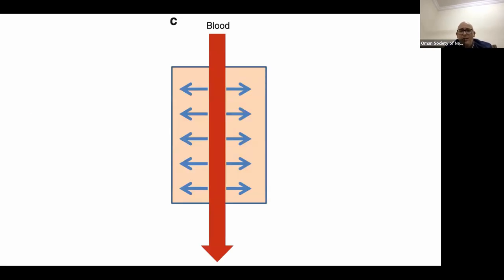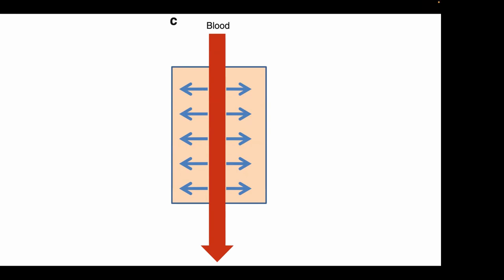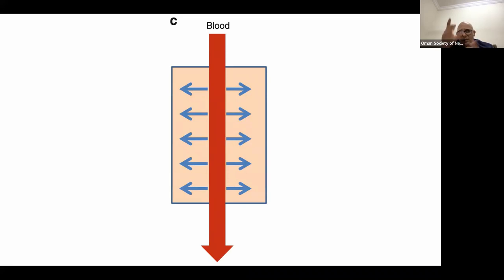What is hemoperfusion? As seen in the picture, blood moves through an inlet — it is an extracorporeal purification modality where anticoagulated blood passes through a cartridge present as a column containing an absorbent that absorbs toxins from the blood. Unlike filtration, it does not affect blood volume, and unlike conventional dialysis, it is not limited by molecular weight to the same degree. If made specific for certain molecules and hemocompatible, it can greatly help our patients.